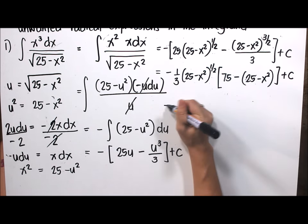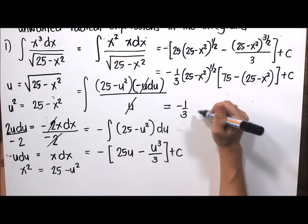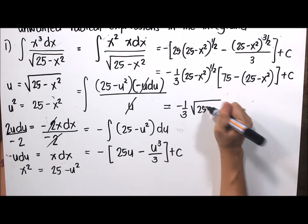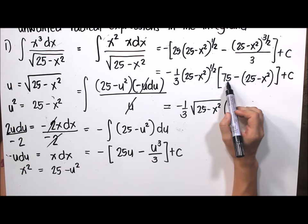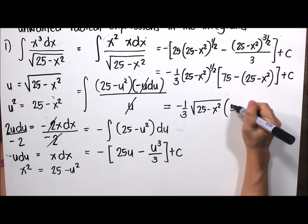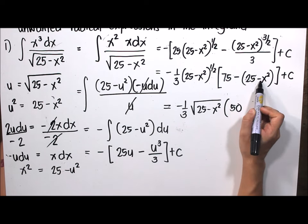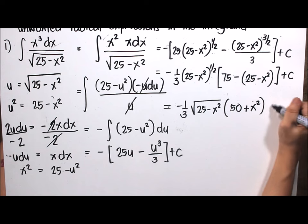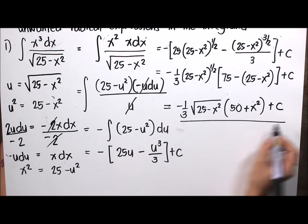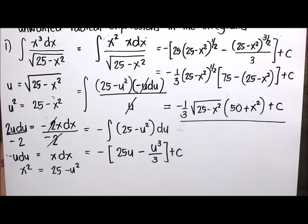Finally, simplifying gives negative one-third times the square root of 25 minus x squared, times the quantity 75 minus x squared, plus C. This is the final answer for the integral of x cubed dx all over the square root of 25 minus x squared.